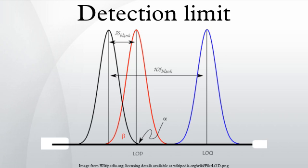This signal is referred to as the noise level. The IDL is the analyte concentration that is required to produce a signal greater than three times the standard deviation of the noise level.